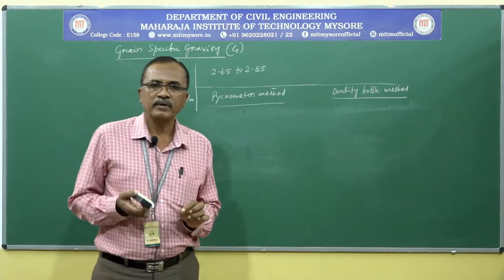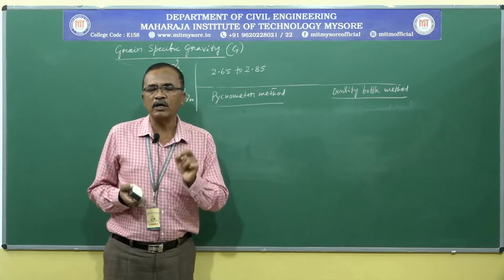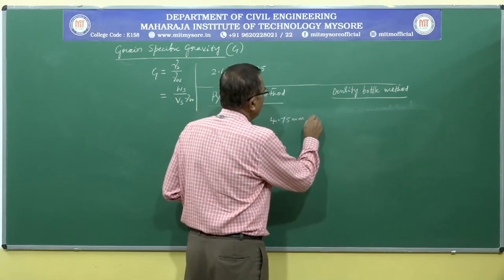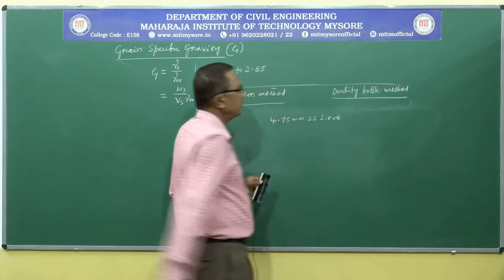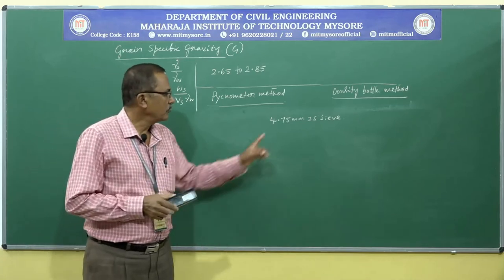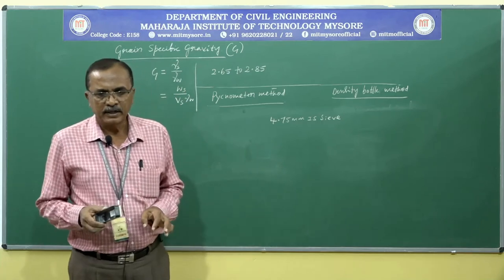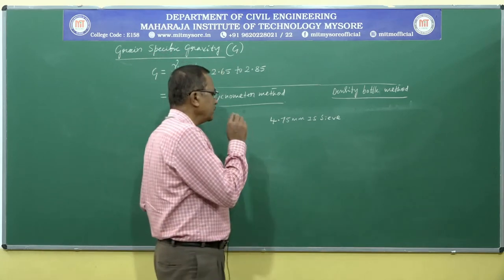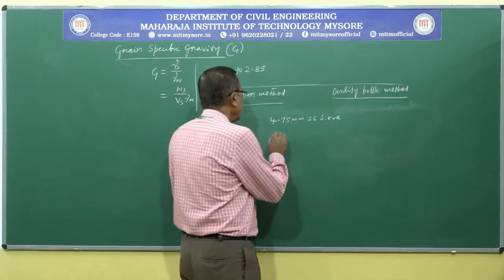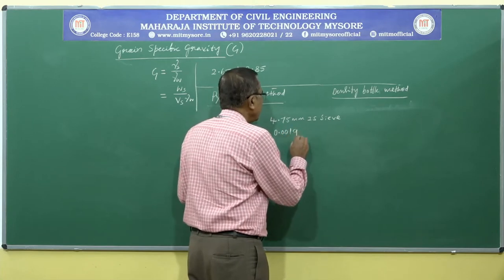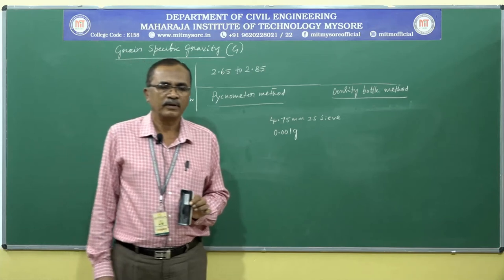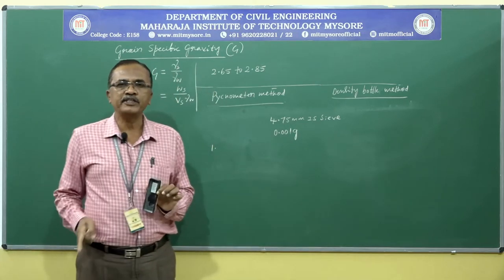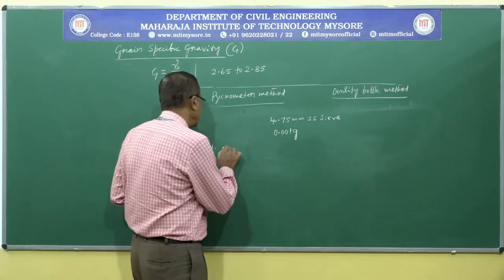The procedure adopted is the same for both methods. First, take dry soil free from organic matter, with traceable heavy metals removed if present. For both cases, we take dry soil passing the 4.75 mm IS sieve. A weighing balance with an accuracy of 0.001 gram is used.